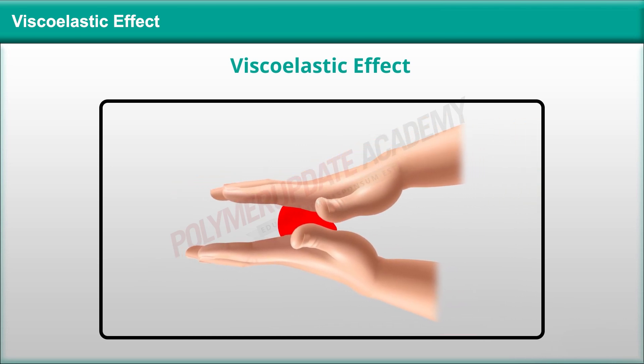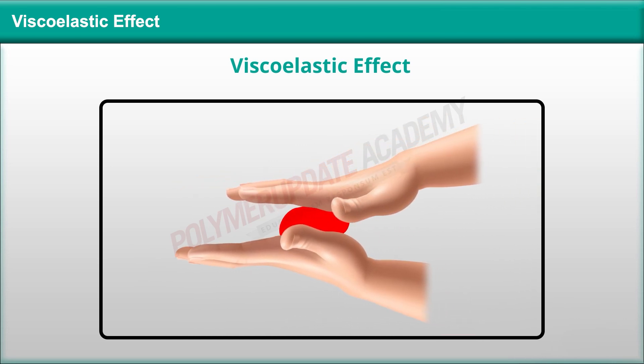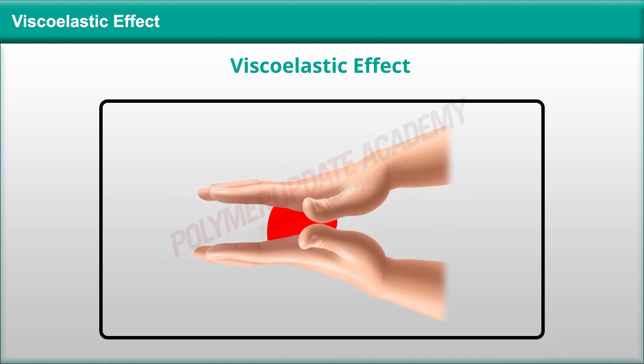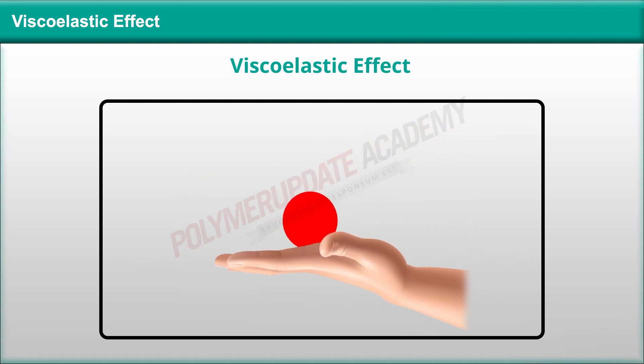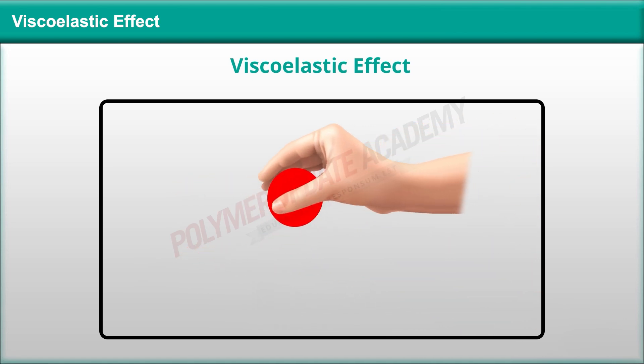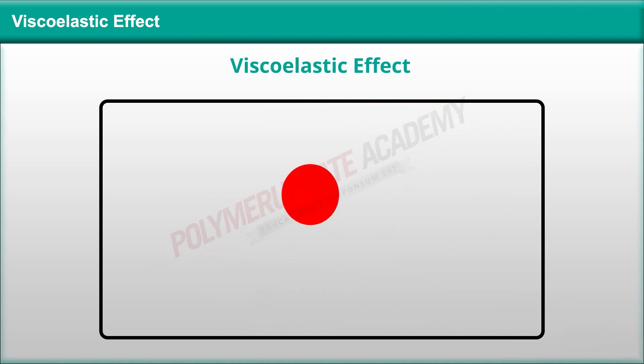We can see that bouncing putty has been rolled into a small ball and this ball can be bounced because we are bouncing it like a regular ball.